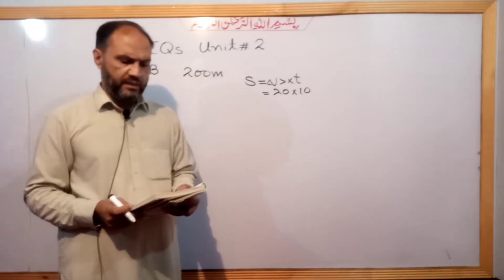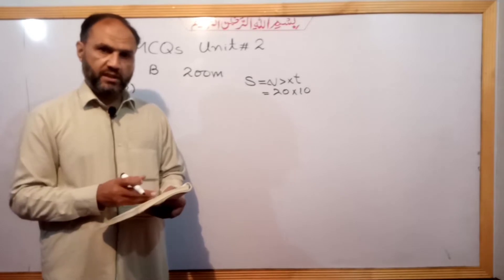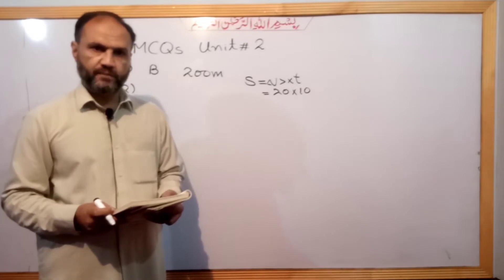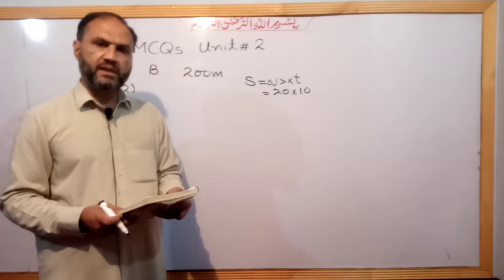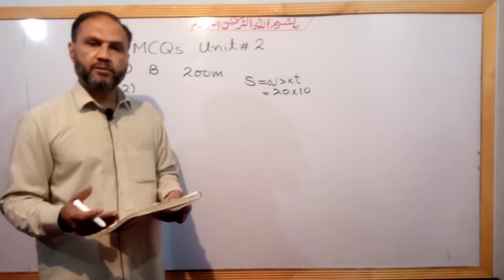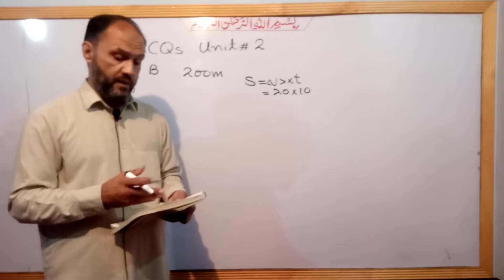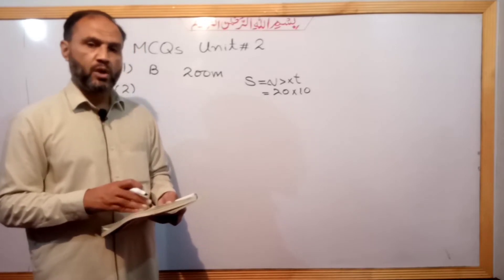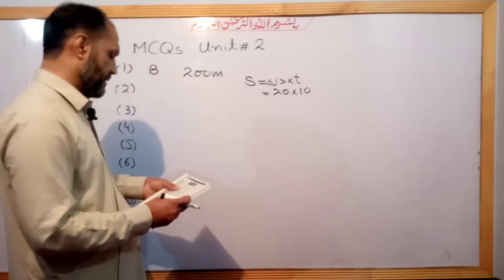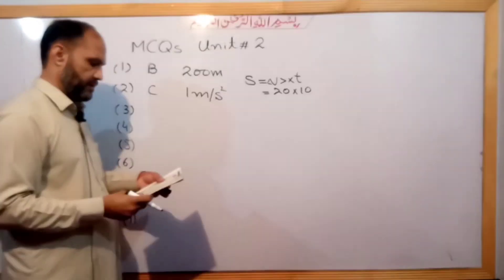Question number 2. A truck accelerates uniformly from 15 meter per second to 20 meter per second. There is a change in speed. What is the acceleration of the truck? Acceleration is the rate of change of velocity. The change in speed is 5, divided by time 5, giving option C: 1 meter per second squared. That is the acceleration.